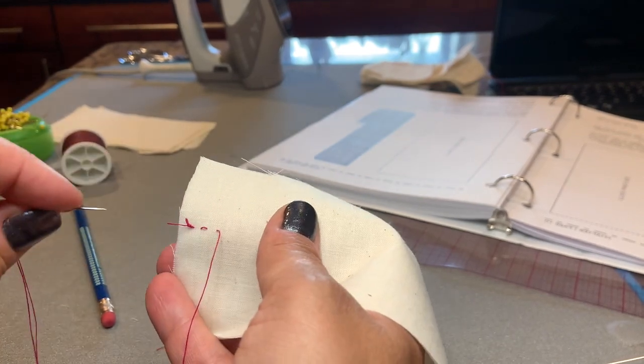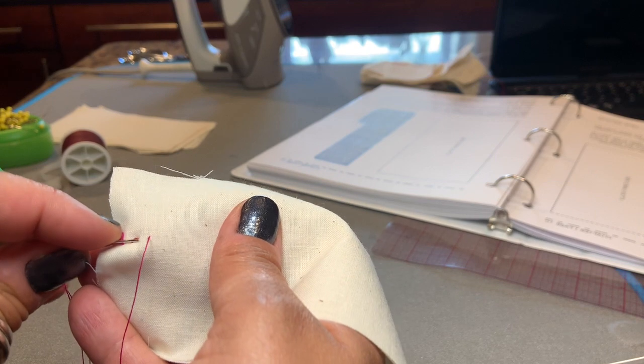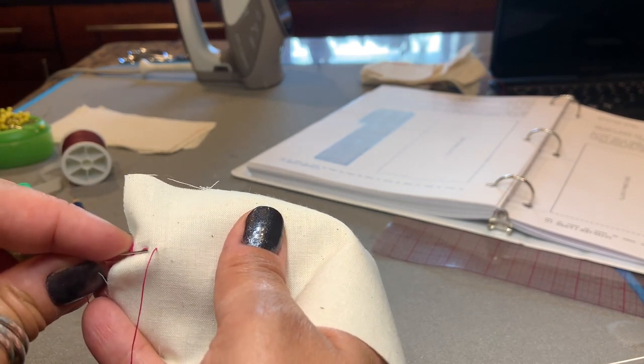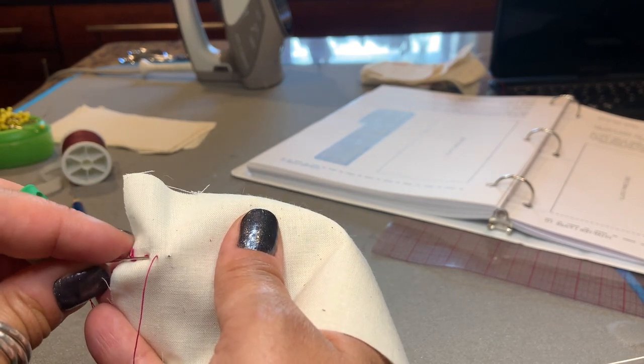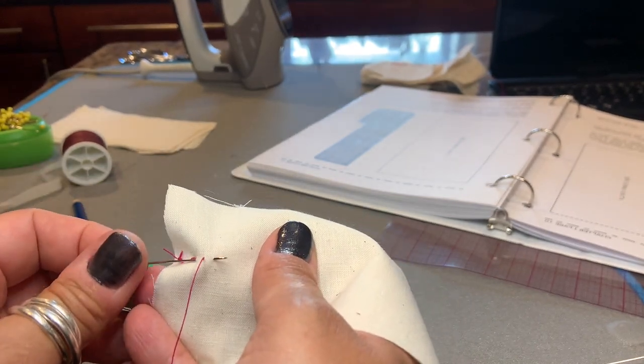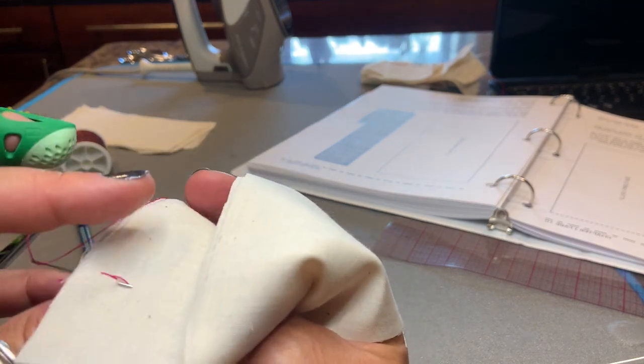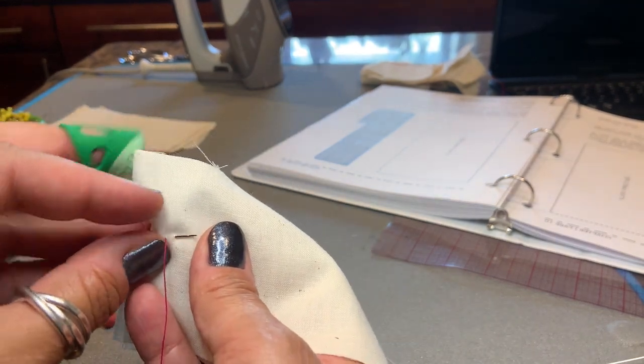Then you're going to go back again to where you just were, putting the needle as close as you can to that previous exit point, the previous place where the needle came out. Again, put the needle through all the way past where you just were, that's what it looks like on that side, and then pull it through.